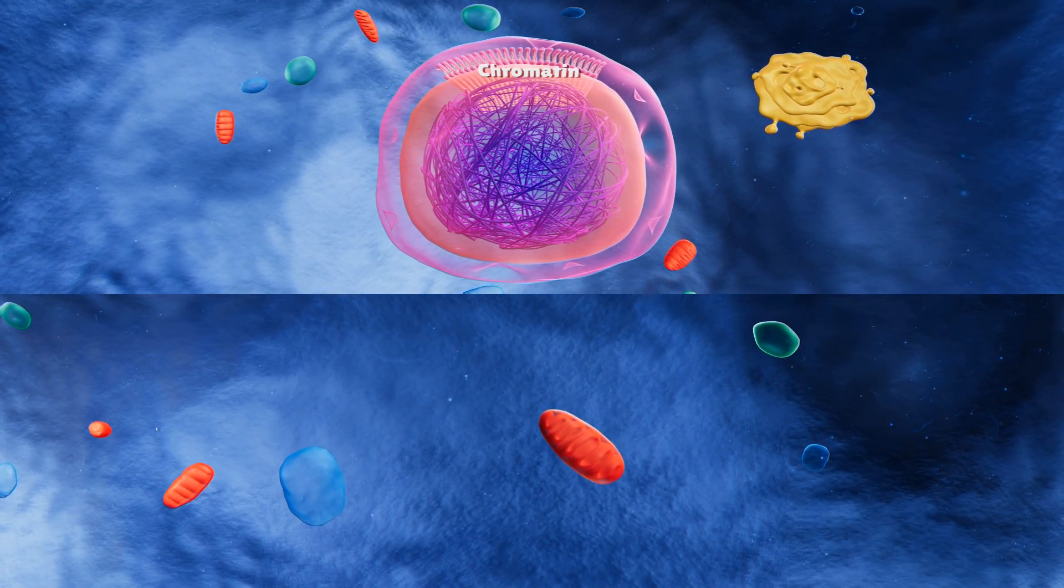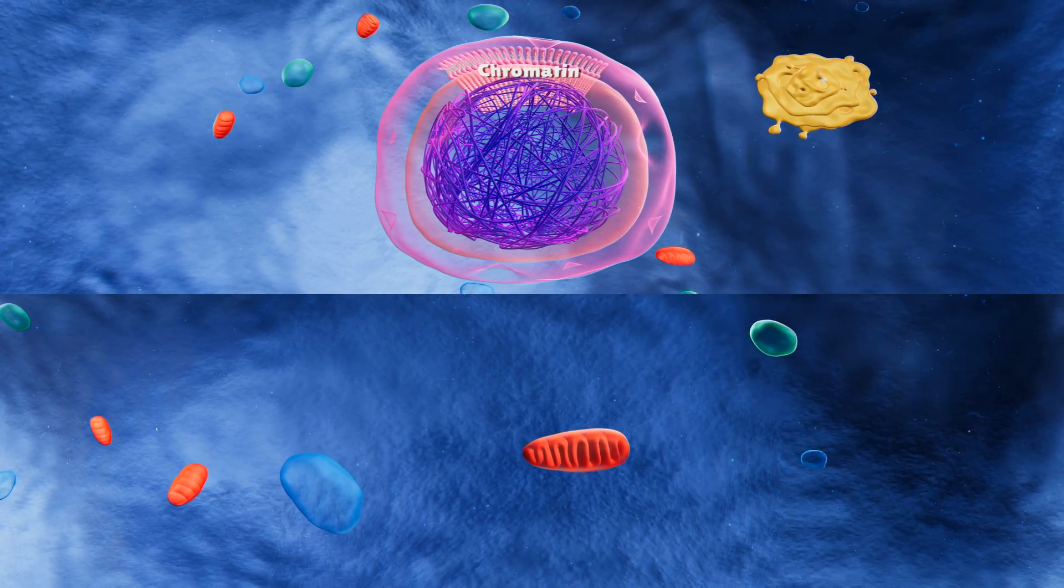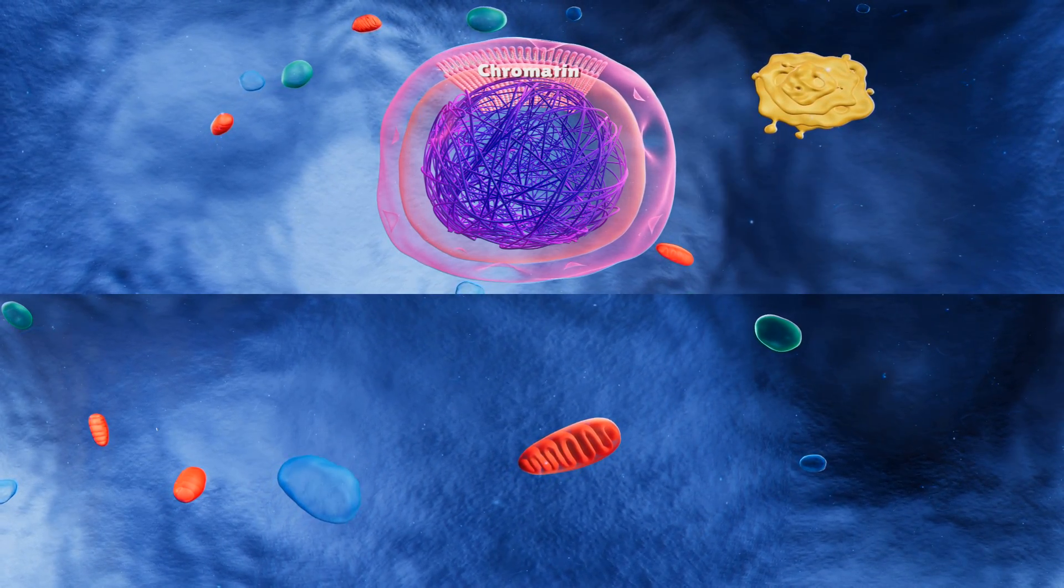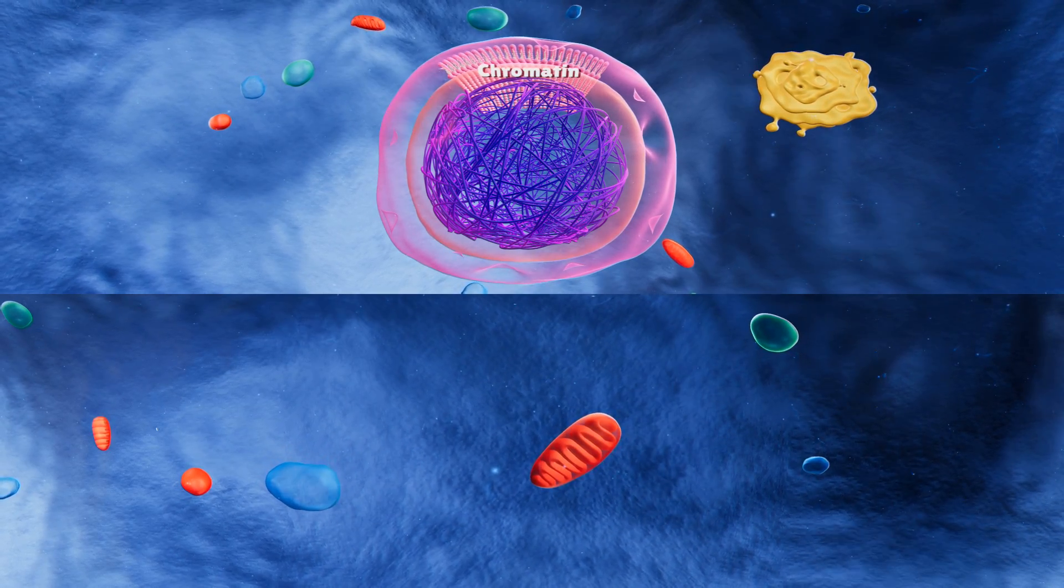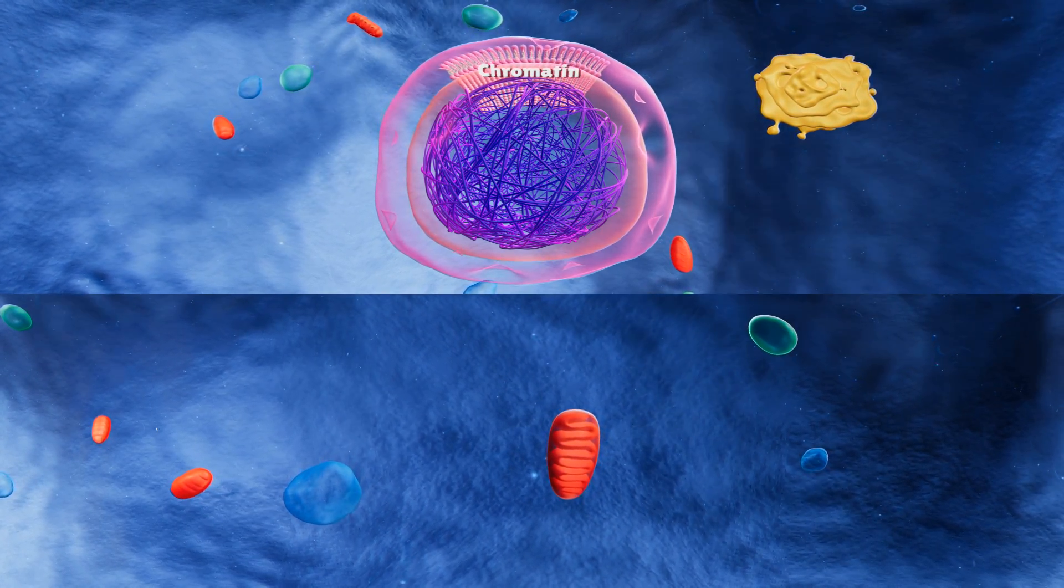The nucleus also contains chromatin. Chromatin is made up of DNA and supporting structural proteins. Each chromatin is actually a very long string of DNA which coils itself to form a chromosome.